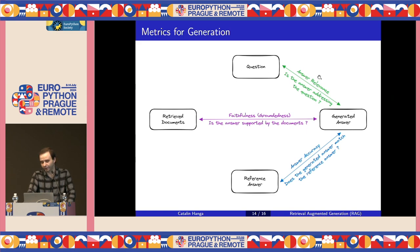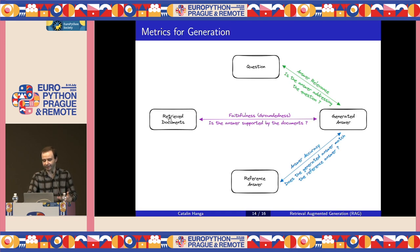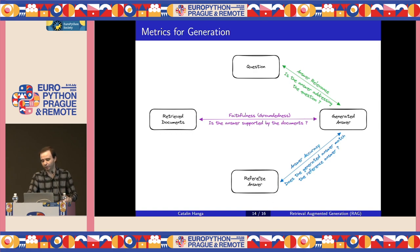On the generation side, we have three metrics: answer relevance, faithfulness, and answer accuracy. Answer relevance measures if the generated answer provides the information that was requested in the question. Faithfulness tells us if the generated answer is based on the retrieved information and doesn't contain any made-up information — this is the metric used to check if the model is hallucinating. Answer accuracy evaluates if the generated answer is consistent with the reference answer, which is considered the ground truth.